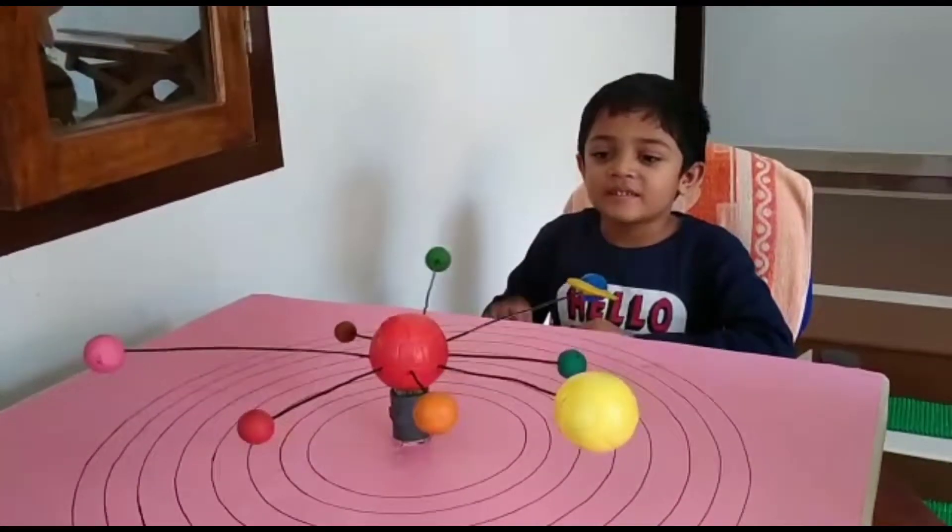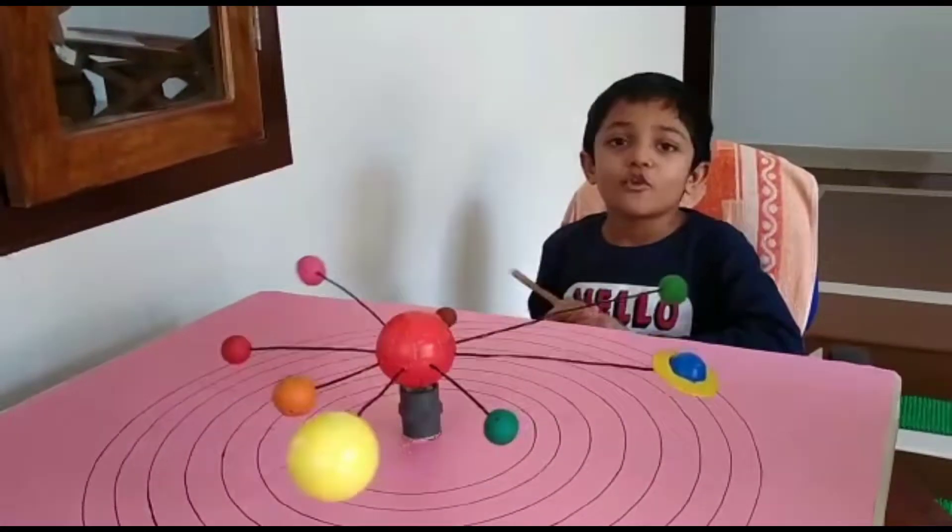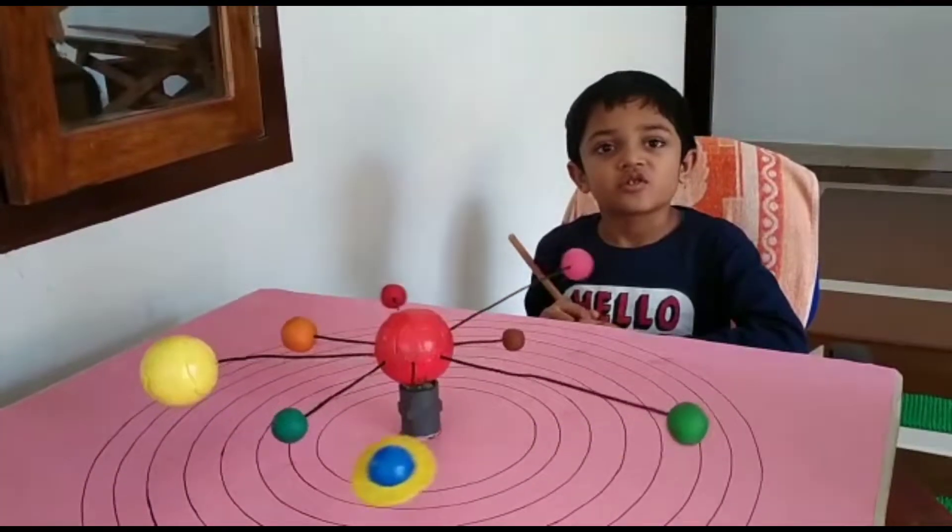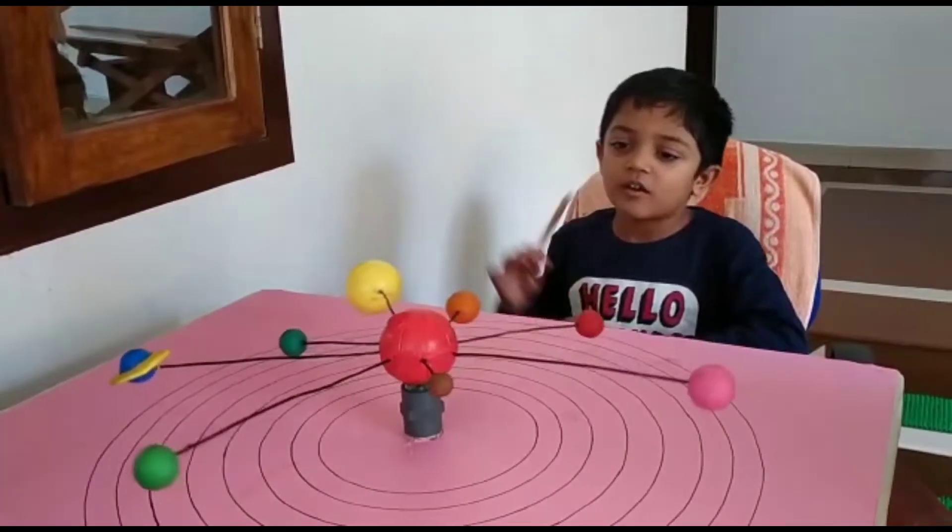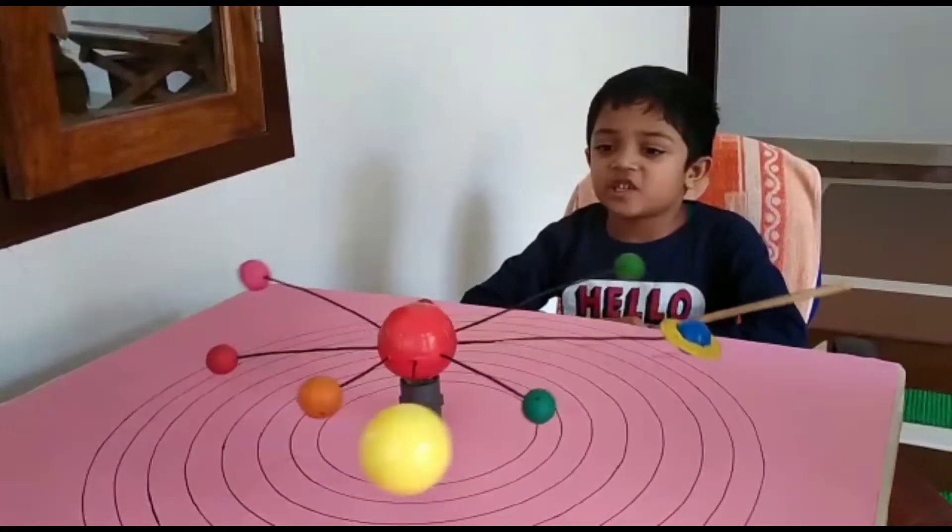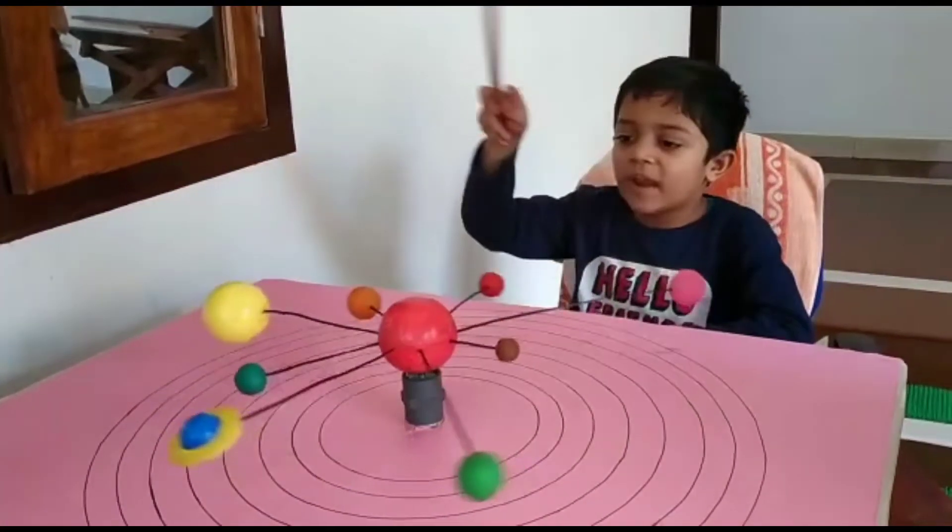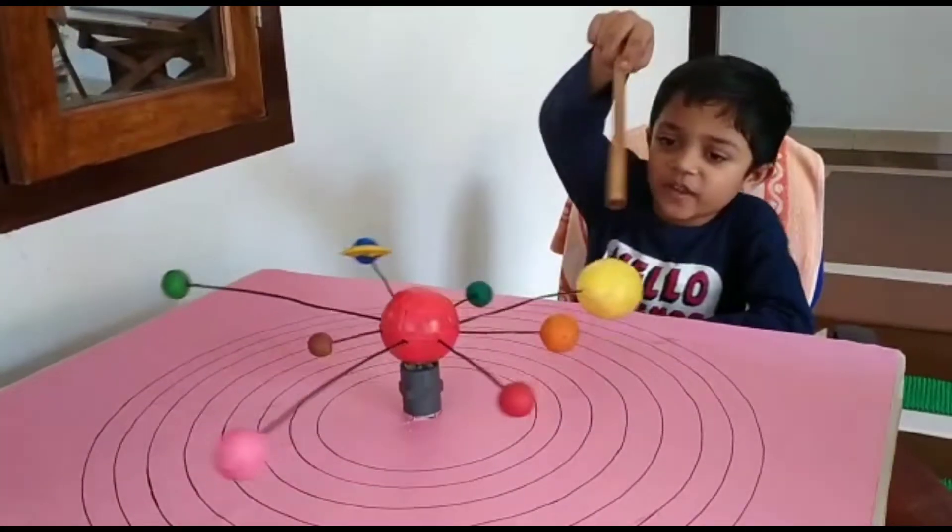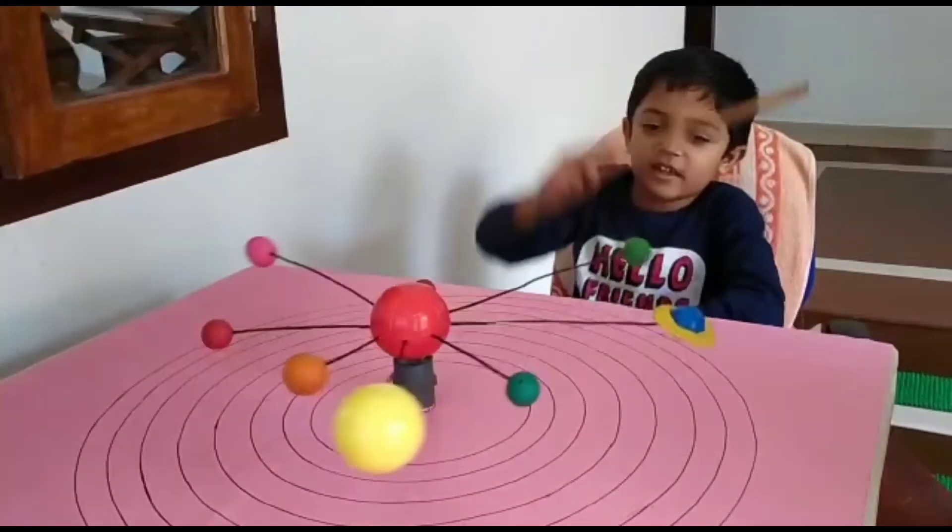Hi, this is the working model of solar system. Solar system consists of sun and objects. It is gravitationally bounded. The planets are revolving around the sun in their orbit.